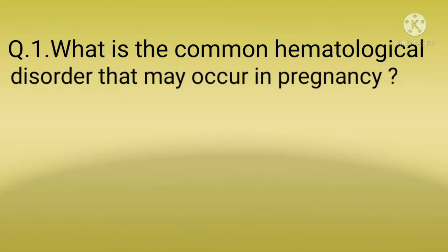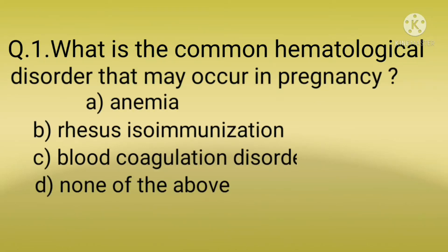Let's start the MCQ bank. Question number one: What is the common hematological disorder that may occur in pregnancy? Options are: option A, anemia; option B, Rh isoimmunization; option C, blood coagulation disorders; option D, none of the above.